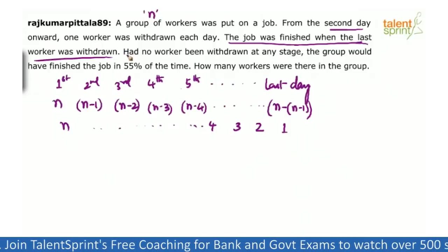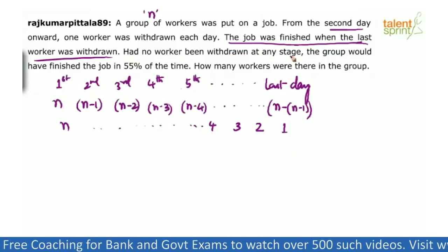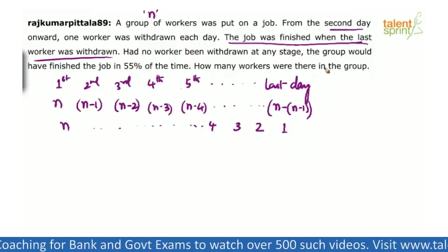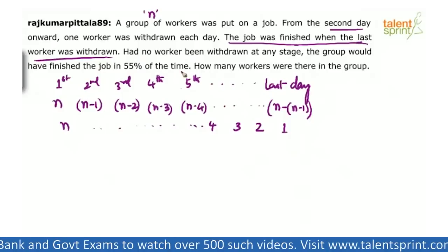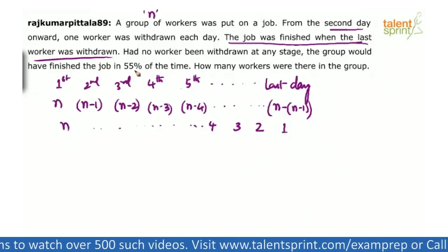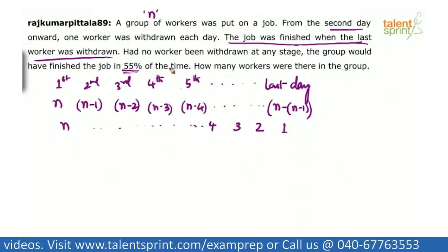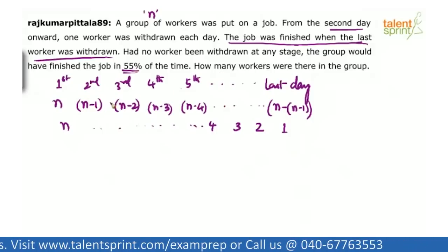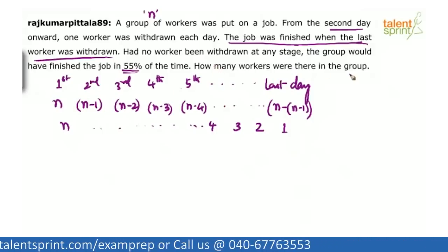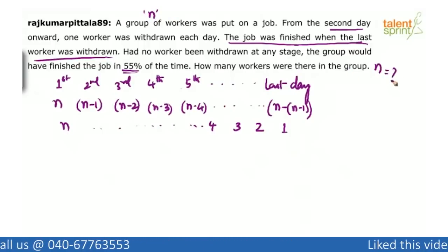The other point given in the question is: had no worker been withdrawn at any stage, the group would have finished the job in 55% of the time. So whatever time they took, only 55% of that time would be needed if the workers were not removed. We need to find the value of n.